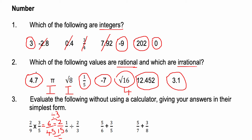So multiplying fractions: times the top two numbers together and the bottom two numbers together, then simplify where possible. Your knowledge of factors will come into play here. For one sixth divided by two thirds, dividing fractions means I keep the first fraction, flip the second, and change it to a multiply. So it becomes one sixth times three halves. One times three is three, six times two is twelve, giving three twelfths, which simplifies to one quarter.